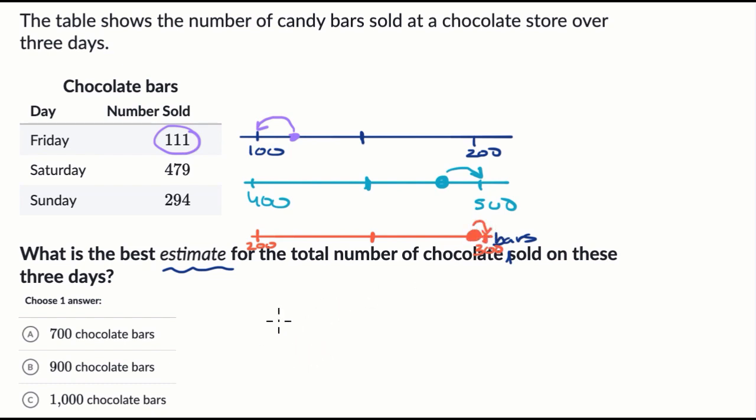And so to estimate the total number, I would add 100 plus 500 plus 500 plus 300. Sunday, 294 is much closer to 300 than to 200, and I'm trying to get everything to the closest 100. And so this is plus 300. And so what's that going to be?